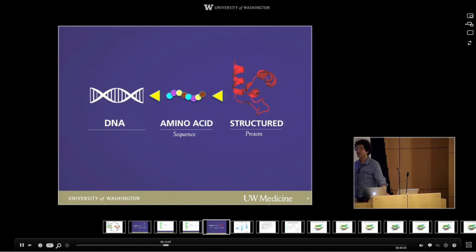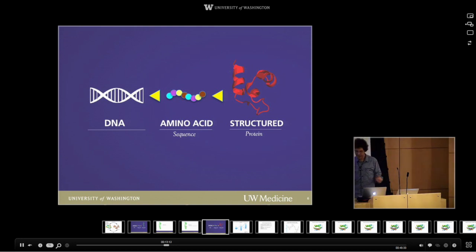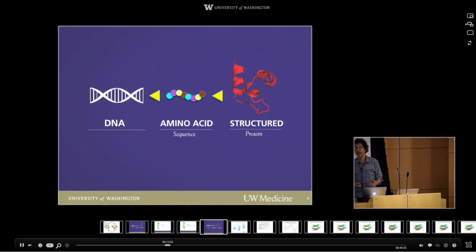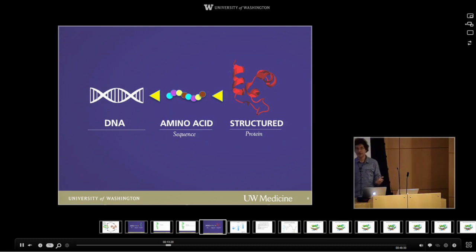Once we have the DNA — this artificial gene encoding our designed protein — we put the gene into bacteria, and the bacteria make lots and lots of the protein. After we've grown up the bacteria, we break them open, the protein pops out, and then we can see whether it in fact blocks the flu virus. That's basically what we do for every problem I'm going to tell you about today.